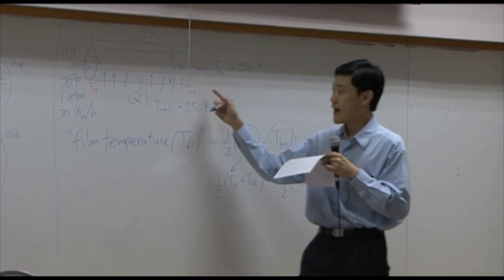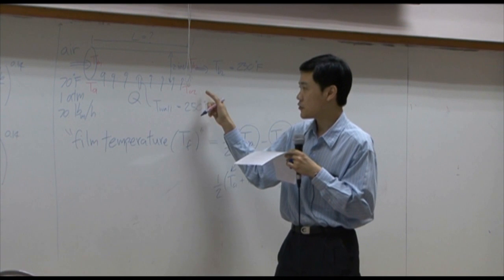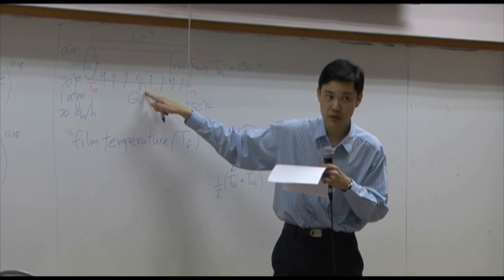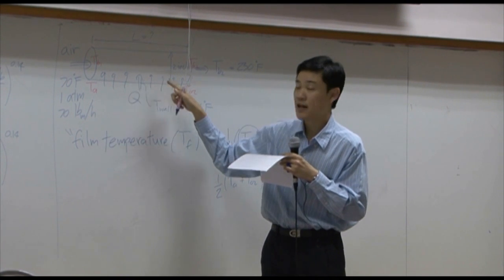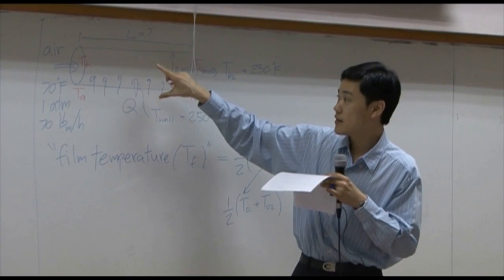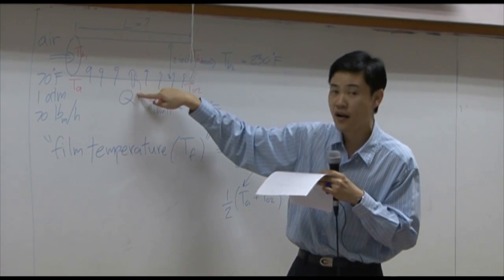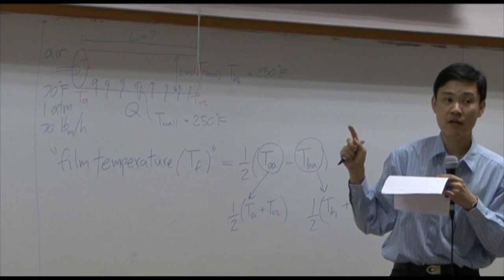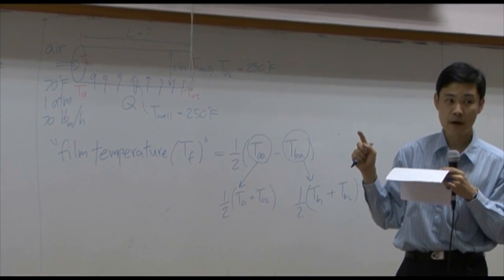So if you take the average between T01 and T02, the average temperature will be somewhere in between. For bulk temperature as well, the average bulk temperature will be somewhere in between. The difference between here and there, half of that will be assumed to be the average number that we're looking for.